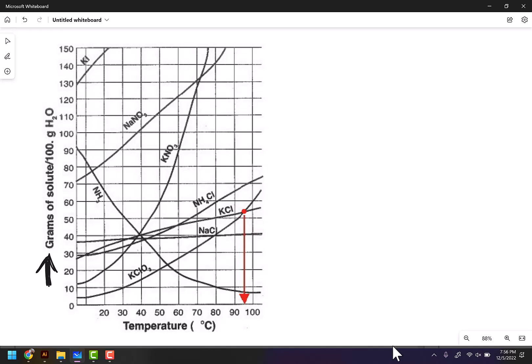So what that means is, for example, if we were looking at sodium nitrate, which is here, this tells you how many grams of sodium nitrate can dissolve in 100 grams of water at different temperatures, because you'll notice the temperature here on the x-axis.